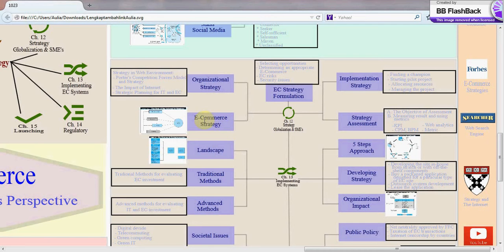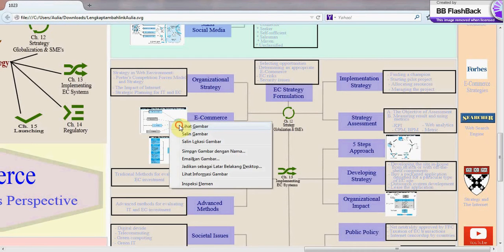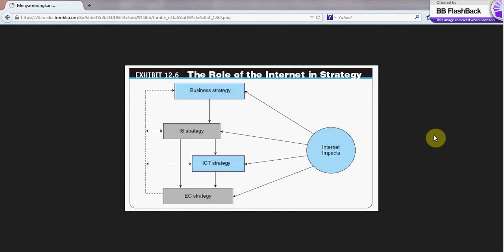Here we go to electronic commerce strategy. This is the role of the internet in strategy of electronic commerce. You can see here that the internet has a lot of impacts in business strategy, in IS strategy, in ICT strategy, and in EC strategy. All of those strategies connect to each other. You have to think about the whole package of the strategy and the impact of the internet in your e-commerce business.